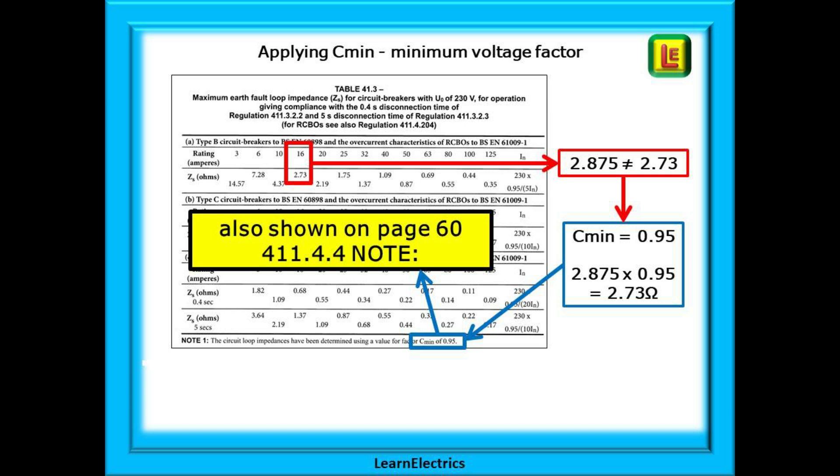We must multiply 2.875 by 0.95 and out pops the answer 2.73 which now matches the table. So all the ZS values shown in the tables have had a C min of 0.95 applied to them.